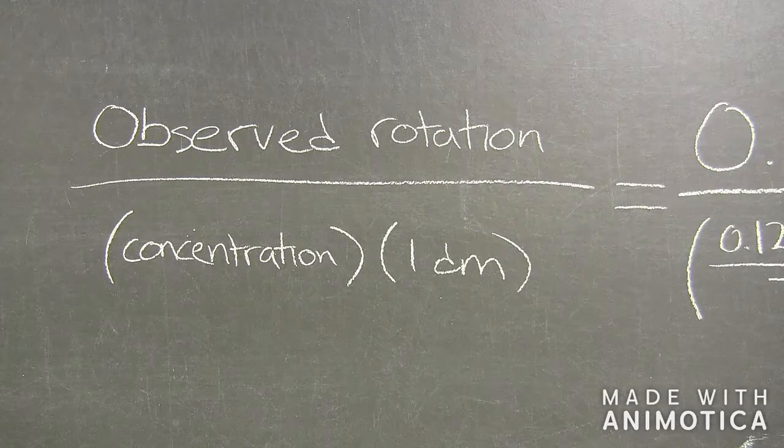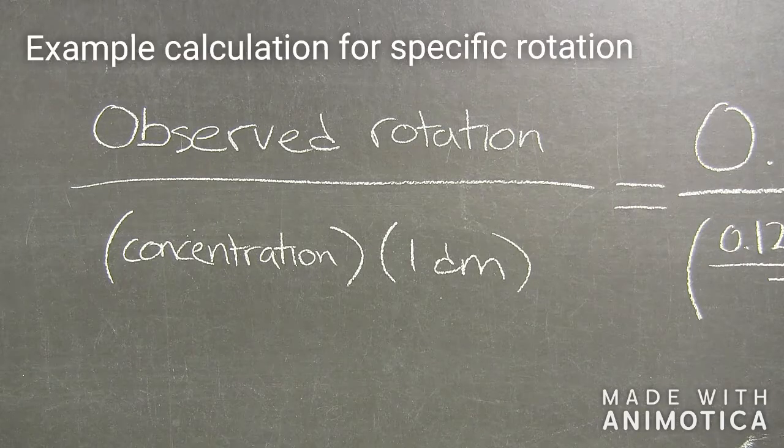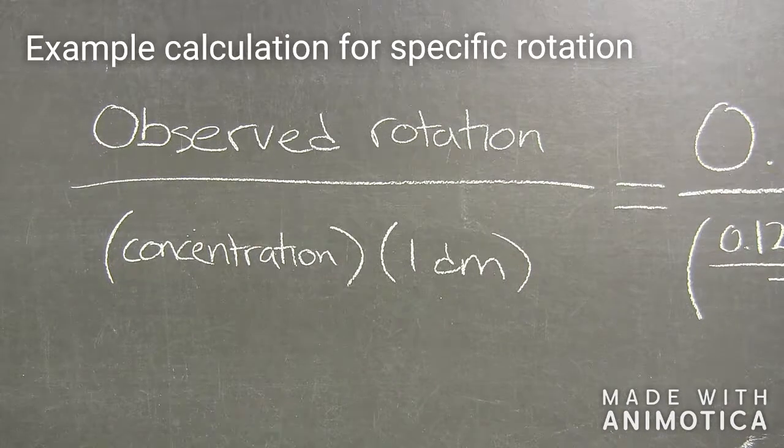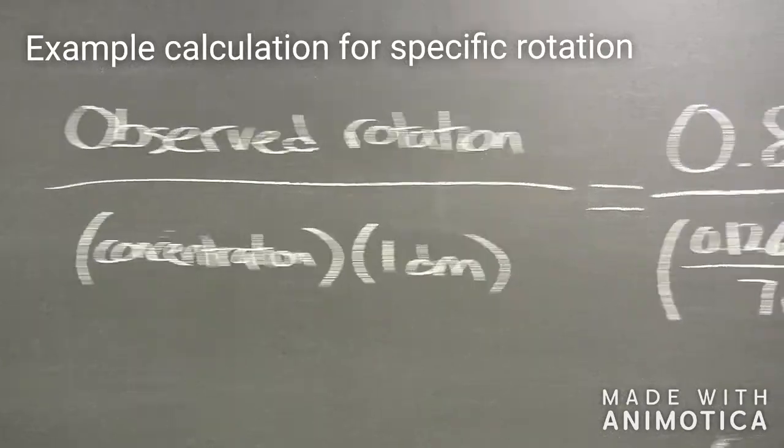Specific rotation can be found by dividing your observed rotation given by the polarimeter by the concentration of your sample times the length of the polarimeter cell in decimeters.